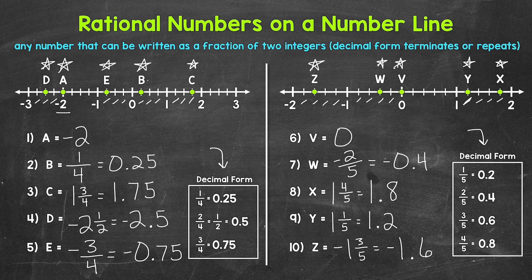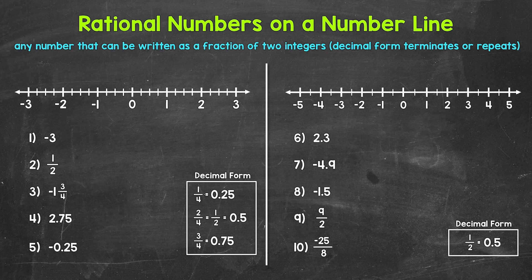That's how to identify rational numbers on a number line. Let's move on to graphing rational numbers on a number line. Here are our examples for graphing — let's jump into numbers one through five.